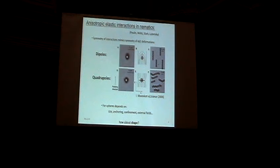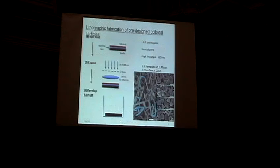And so for spheres, whether or not you get a dipole or quadrupole depends on many things. It can depend on the size of the particle, the type of anchoring you have on the surface, confinement, how big the sample is, and maybe external fields. And so what I'm going to talk about is what about particle shape?